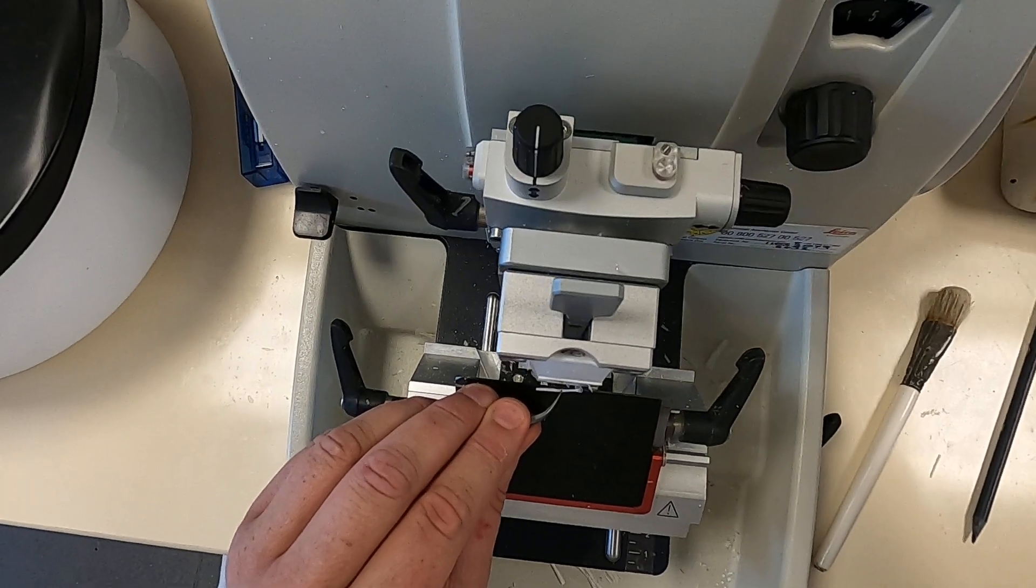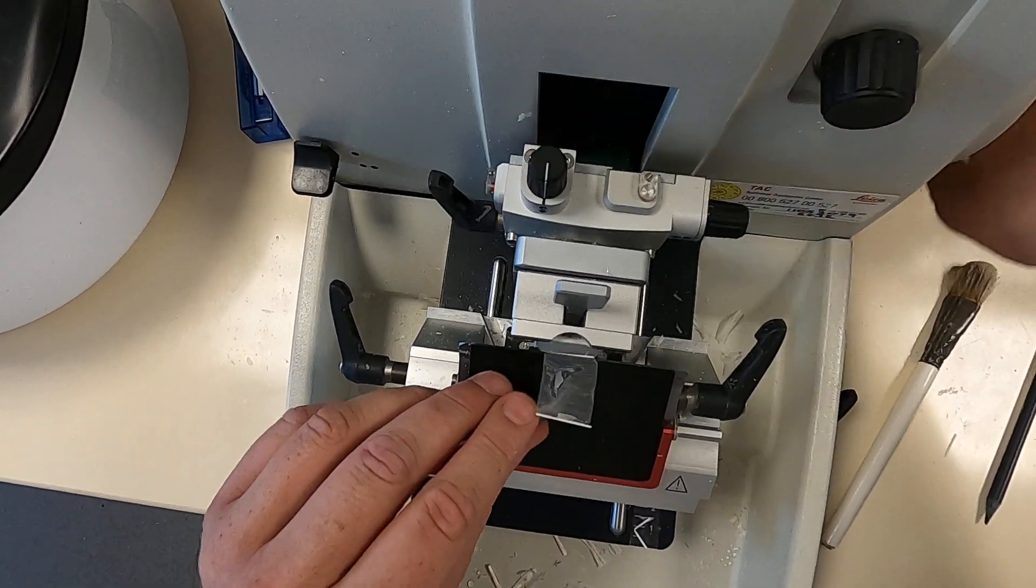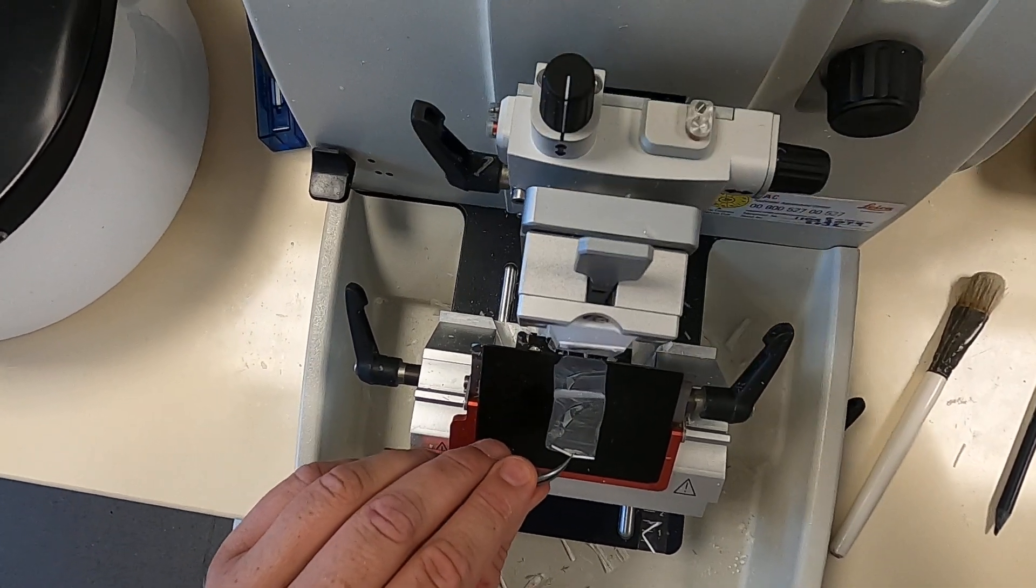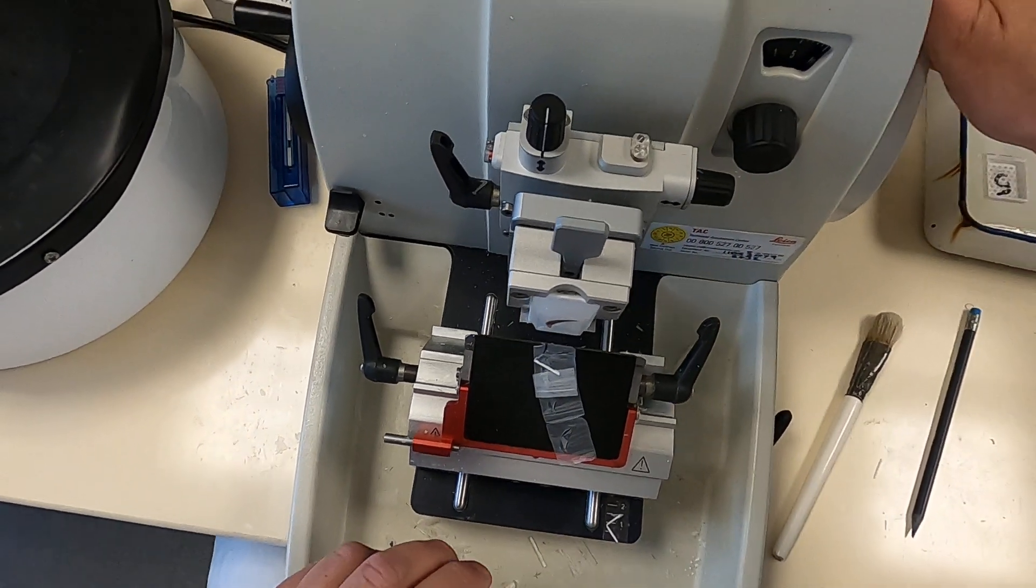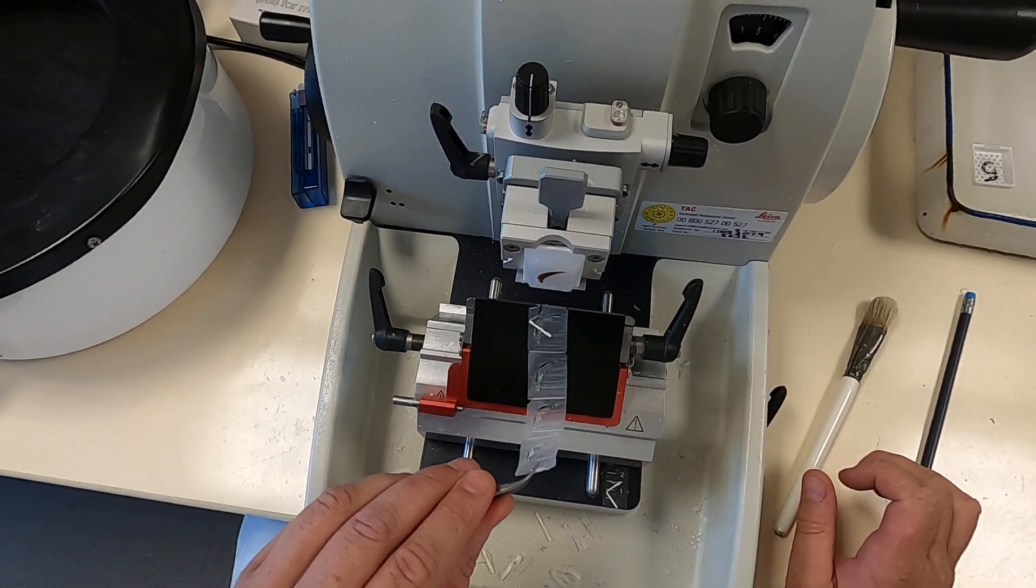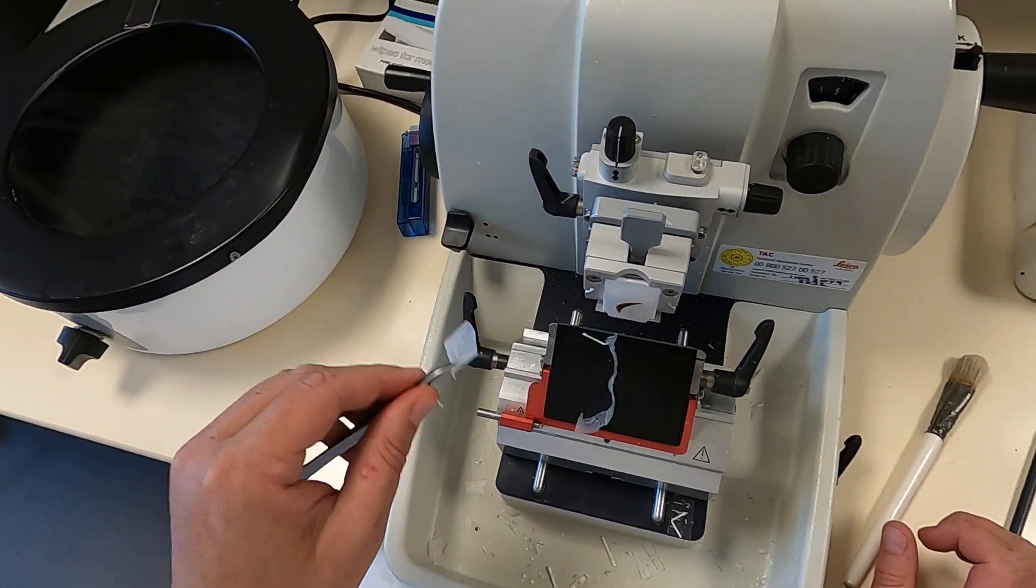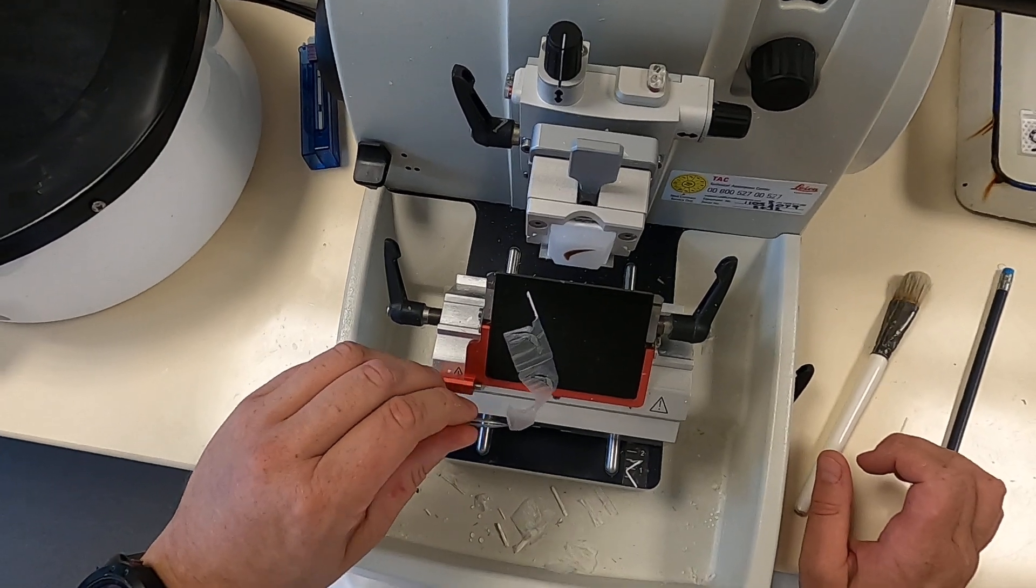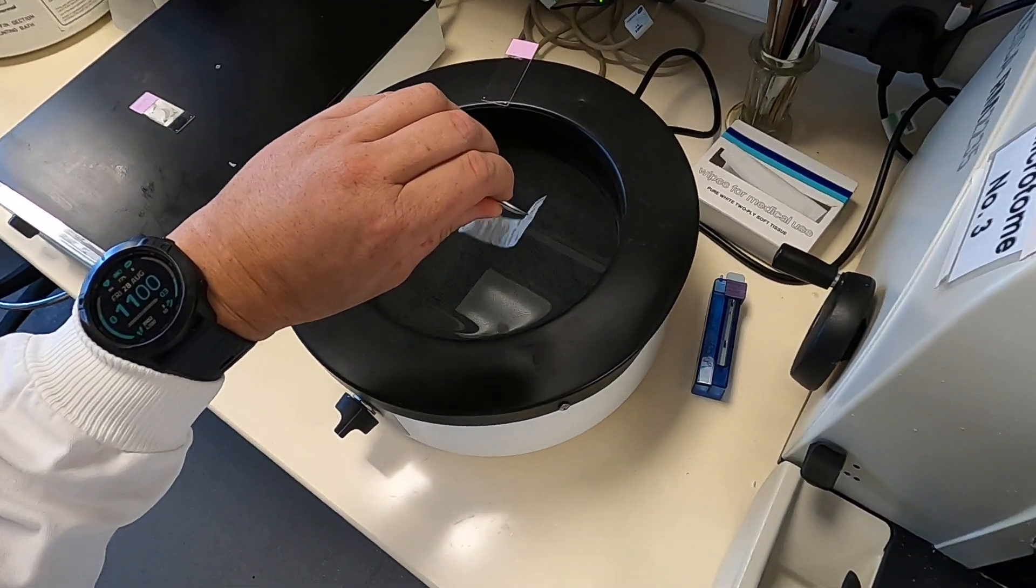Then you start to pull off thin sections. Now, each one of these sections, remember, is only four microns in thickness, so it's thinner than a hair on your head. The slightest breeze generally causes them to blow all over the place. You pick them up.